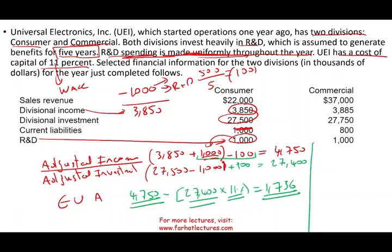We can do the same for the commercial division. Starting with divisional income of $3,880, we add $900 (the net R&D adjustment: add $1,000, deduct $100 amortization). For the divisional asset, we deduct $800 in current liabilities and add $900 in capitalized R&D. The EVA for the commercial division should come to $1,721.50.